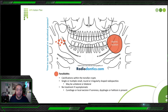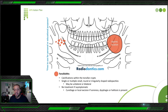Second is tonsillolith — calcification within the tonsillar crypts. You would see it as a radiopacity coming toward the ramus of the mandible. It appears as single or multiple, round or irregular-shape radiopacities, maybe unilateral or bilateral. No treatment if asymptomatic. Most of these require no treatment, but some are extremely dangerous.